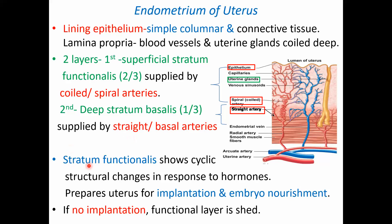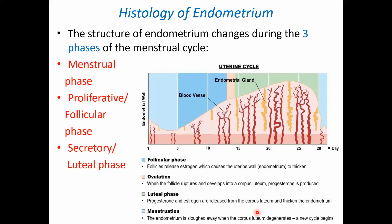The stratum functionalis shows cyclical structural changes in response to hormones. It prepares the uterus for implantation and embryo nourishment. If no implantation occurs, the functional layer is shed. The structure of the endometrium changes during the three phases of the menstrual cycle.